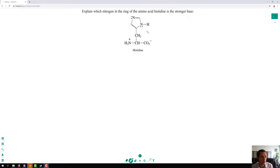We've got this big complicated molecule here, histidine, but we're really only concerned with the ring part here. So we can kind of just get rid of this bottom half and just focus on this ring. We can also label these nitrogens 1 and 2.